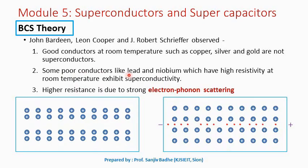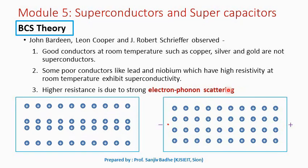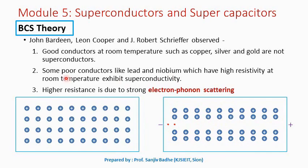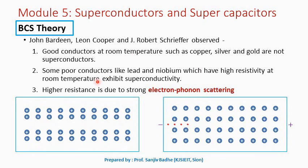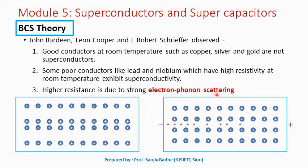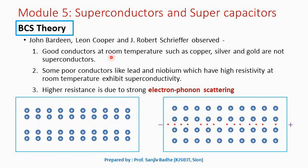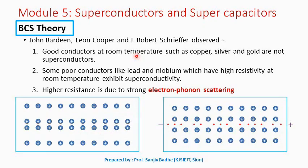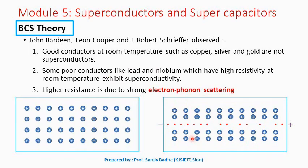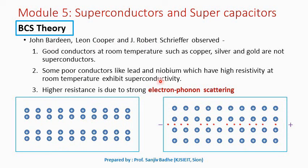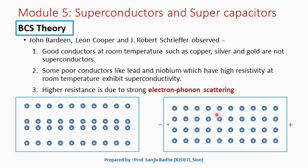Poor conductors at room temperature means higher electron-phonon scattering, because electron-phonon scattering is the main reason behind resistance and higher values of resistance. So poor conductors get transformed into the superconducting state at low temperature. Poor conductor means higher, stronger electron-phonon scattering, and therefore this electron-phonon scattering has something to do with the superconducting phenomenon. Metals which are good conductors have comparatively less electron-phonon scattering and they do not get transformed into the superconducting state.